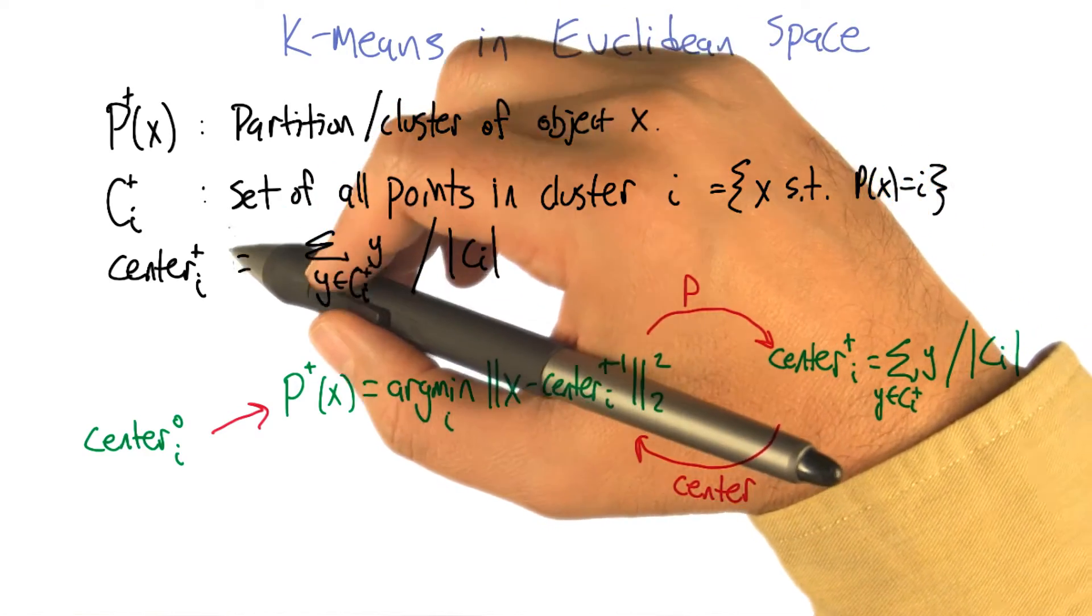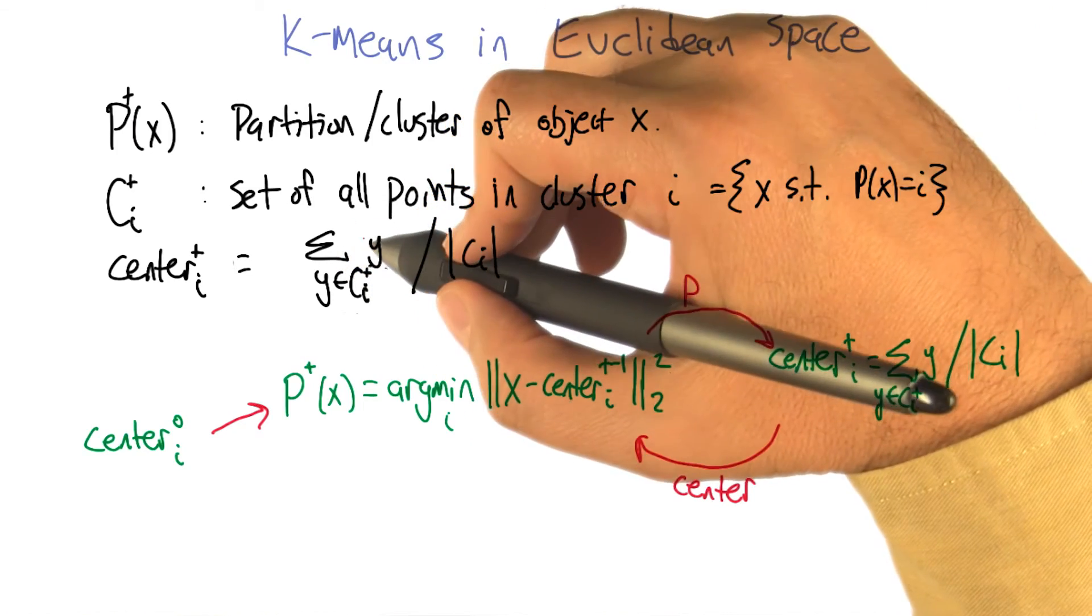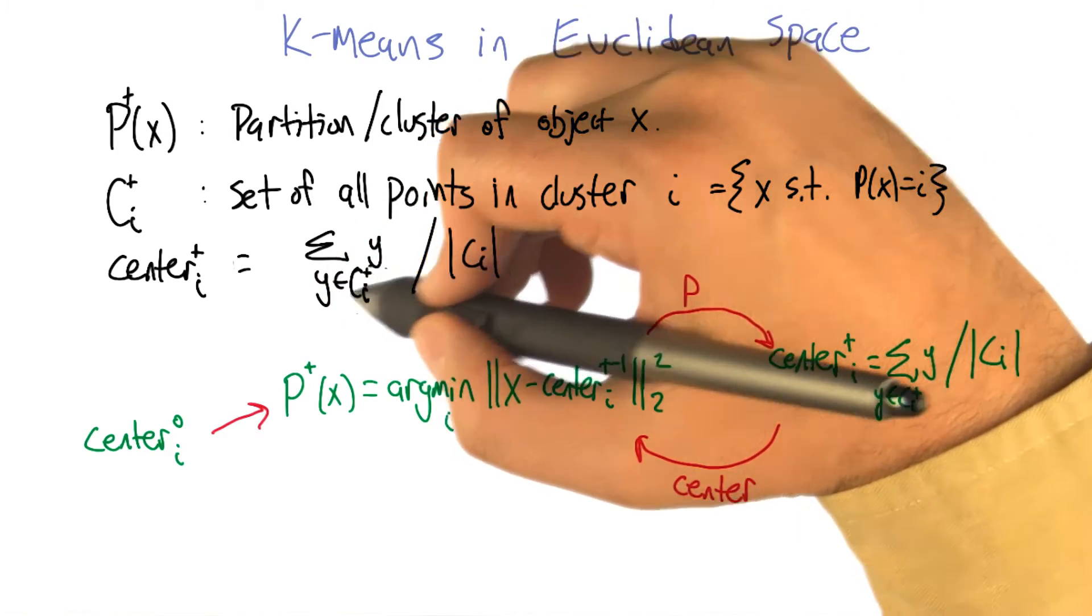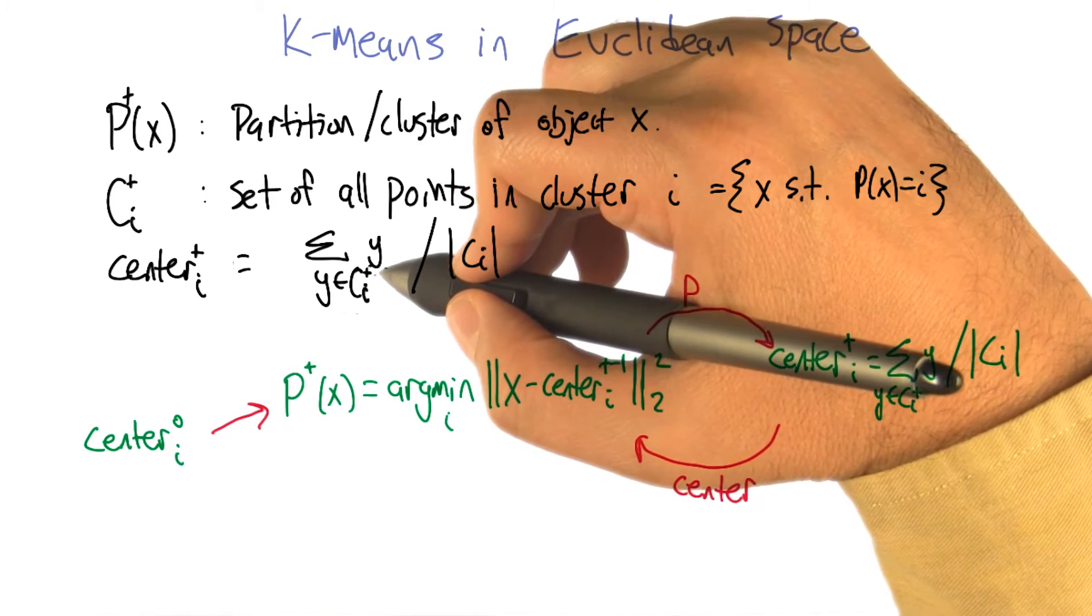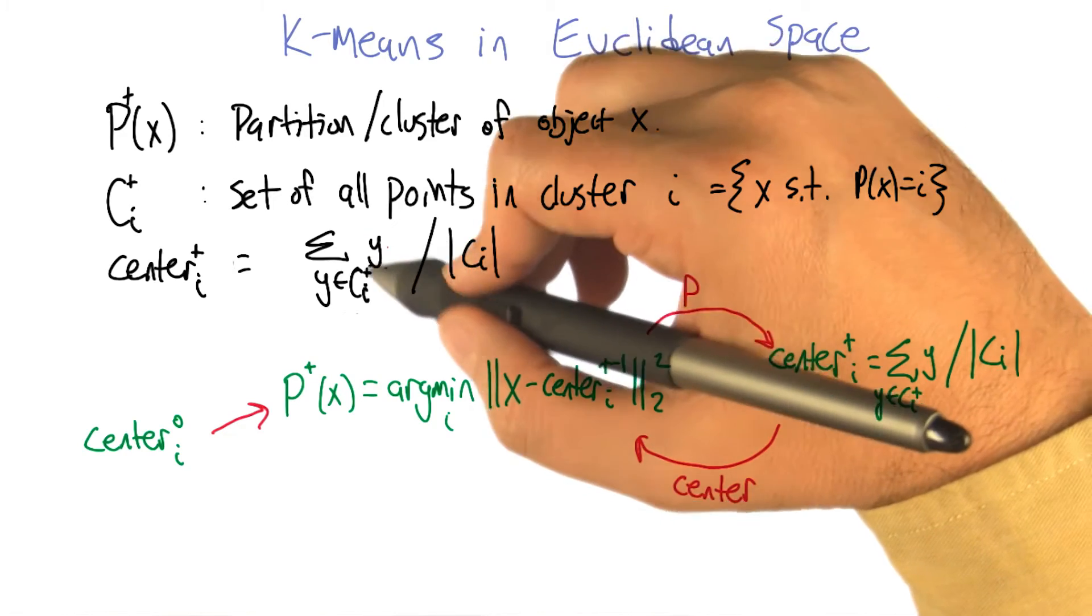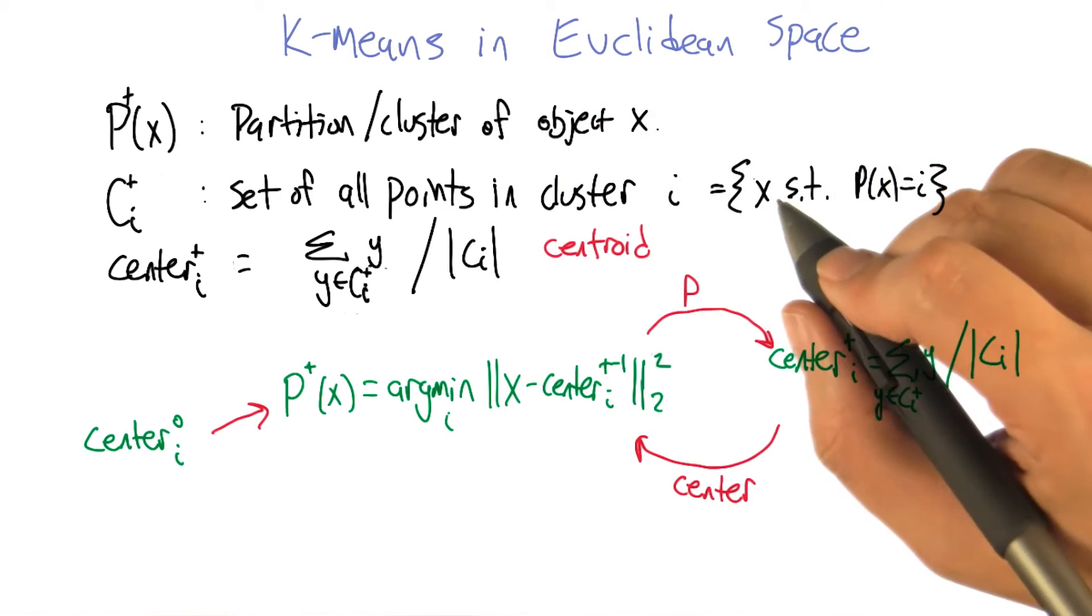We're also going to need to refer to the center of a cluster. Because we're in Euclidean space, it's meaningful to add the objects together. Take all objects in cluster C_i at iteration t and divide by the number of objects in that cluster. This is also called the centroid—it's the mean or centroid.